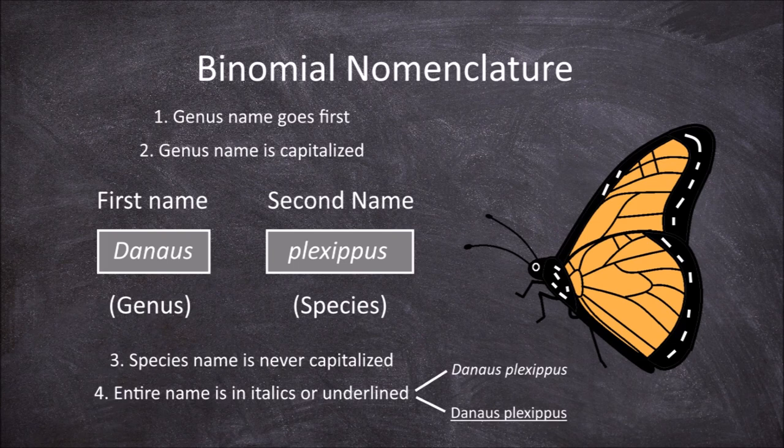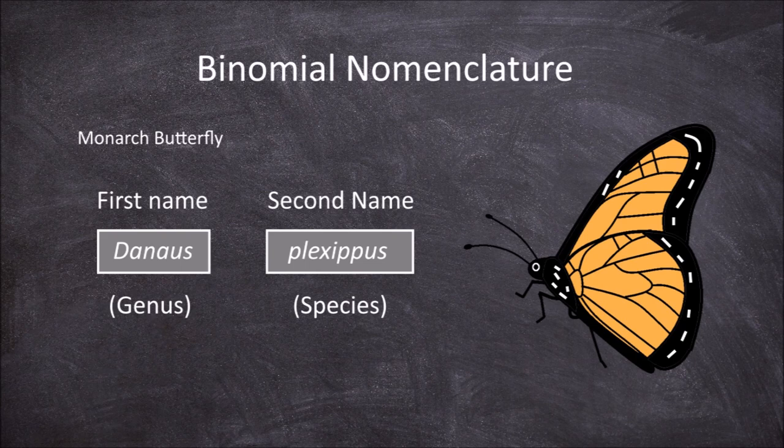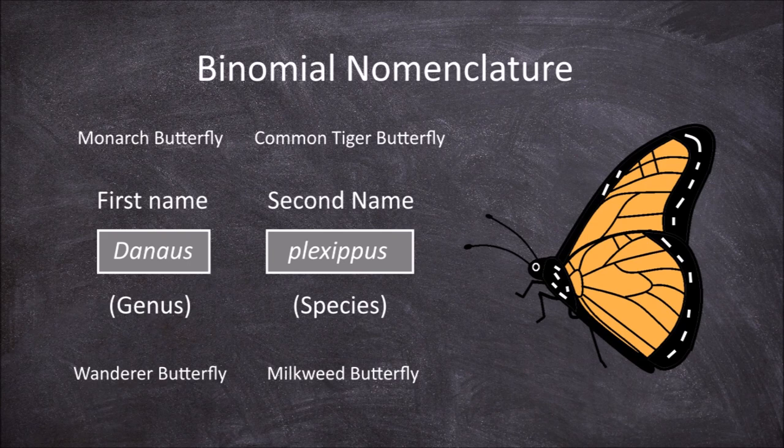The binomial system of naming species is universal among scientists and is used by them to identify species. This is particularly useful as most species have more than one common name, and this common name can change if the species is found in more than one country. In our example, the monarch butterfly is just one of many common names the species is known by — it is also known as the common tiger butterfly, the wanderer butterfly, and the milkweed butterfly, among others. By giving it the one universal scientific name of Danaus plexippus, it allows scientists to more easily identify and study information about the organism between regions.